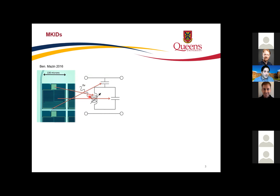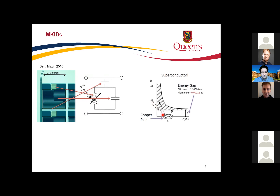When a photon hits the superconductor — below the critical temperature — electrons bind together as Cooper pairs. The photon breaks these into quasi-particles. Because it is a superconductor, the energy gap is different from the Fermi level, and it is almost 10,000 times lower than in semiconductors.